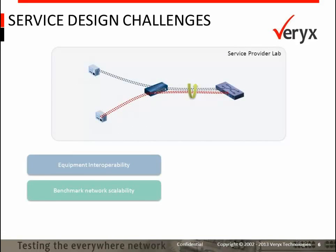Next, one needs to benchmark each equipment and each portion of the circuit to ensure how many simultaneous services of a specific product type each piece of equipment or circuit portion can support simultaneously. For example, how many 30 Mbps bronze services the equipment or a network portion can support simultaneously.